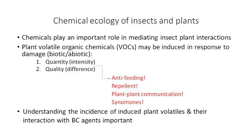Synomones are chemicals that act as mutualistic chemicals. When plants have been damaged, they send out signals, and the natural enemies of the herbivores can then use those signals to find and feed on them. This is very widespread in literature — it's well known and well accepted.